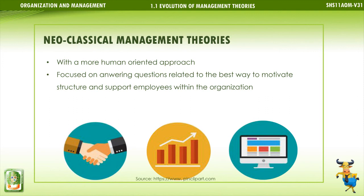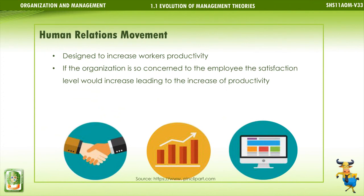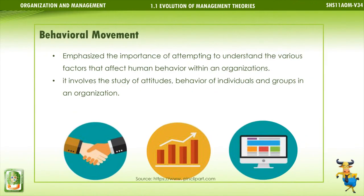Neoclassical Management Theories took a more human-oriented approach, focused on answering questions related to the best way to motivate, structure, and support employees within the organization. The two main sources of neoclassical management theories are the Human Relations Movement and the Behavioral Movement. The Human Relations Movement was designed to increase workers' productivity — if the organization is concerned with employees, the satisfaction level would increase, leading to an increase in productivity. The Behavioral Movement emphasized the importance of understanding the various factors that affect human behavior within organizations, involving the study of attitudes and behavior of individuals and groups.